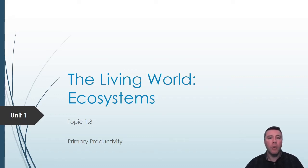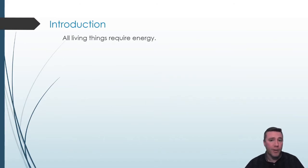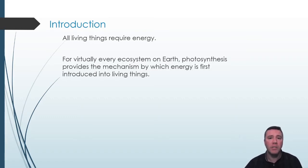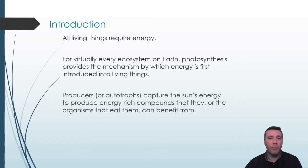Welcome to a look at topic 1.8, primary productivity. All living things require energy. That energy is necessary not only for sustaining life, but propagating it via reproduction as well. For practically every living thing on Earth, photosynthesis is the process by which energy is first made available to living things in an ecosystem. It begins with producers, also known as autotrophs, capturing the sun's energy and producing energy-rich compounds like glucose from which the plant can benefit.